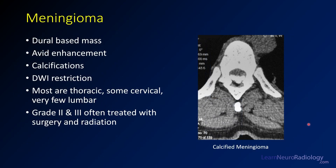Meningiomas are dural-based masses. They typically have avid enhancement, and it's pretty frequent to have calcification. On diffusion-weighted images they can have restriction because of their tightly packed cellular components. Most occur in the thoracic spine, though you'll have some in the cervical and lumbar spine as well. They come in three grades — grade two or three will often be treated with radiation after surgery. Here you see a calcified meningioma on CT: along the dorsal margin of the thecal sac, a densely calcified mass.